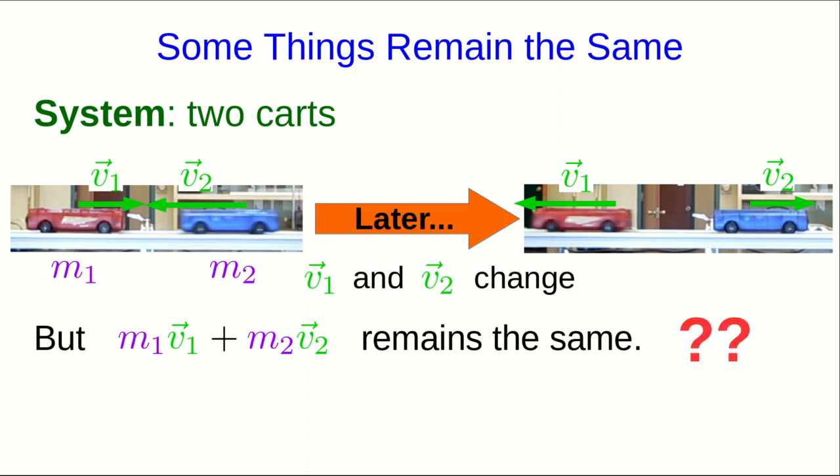Now that's rather curious, because notice, both velocities change, but this quantity that involves both of the quantities doesn't change. We say that the momentum of the system is conserved, and this is a useful fact for predicting the outcome of collisions.